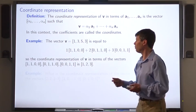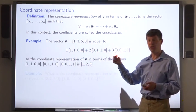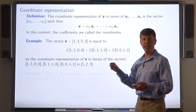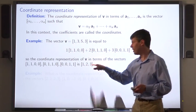For example, this vector can be written as this linear combination, so its coordinate representation in terms of these vectors is the vector of coefficients 1, 2, 3. So that's its representation.